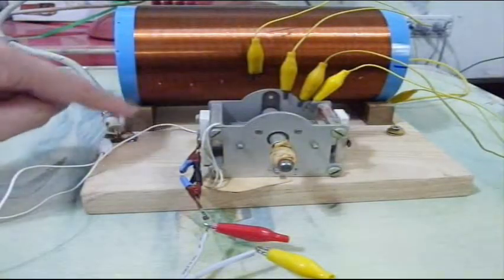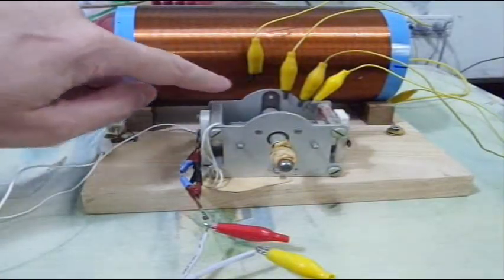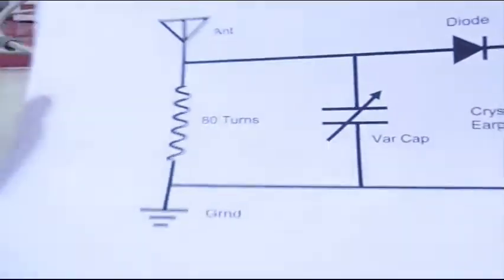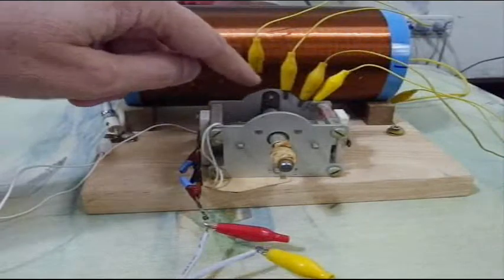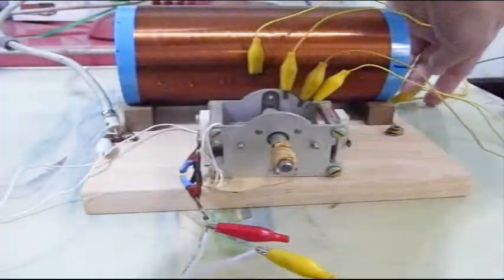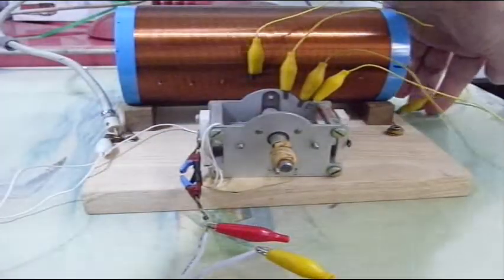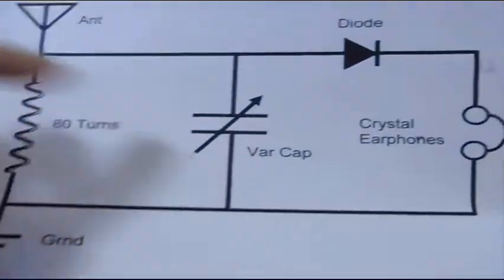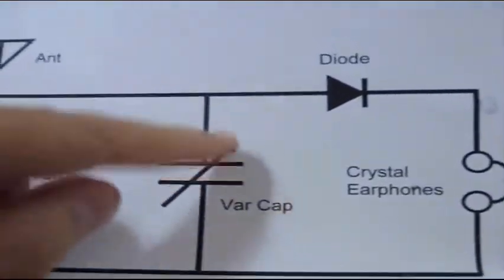This is tapped into the coil right here. And then it goes across 80 turns - 20, 40, 60, 80 turns. 80 turns later it goes to the ground, which is this yellow wire. All these yellow wires connect back here. They also connect to the ground. The ground connects to the variable capacitor.